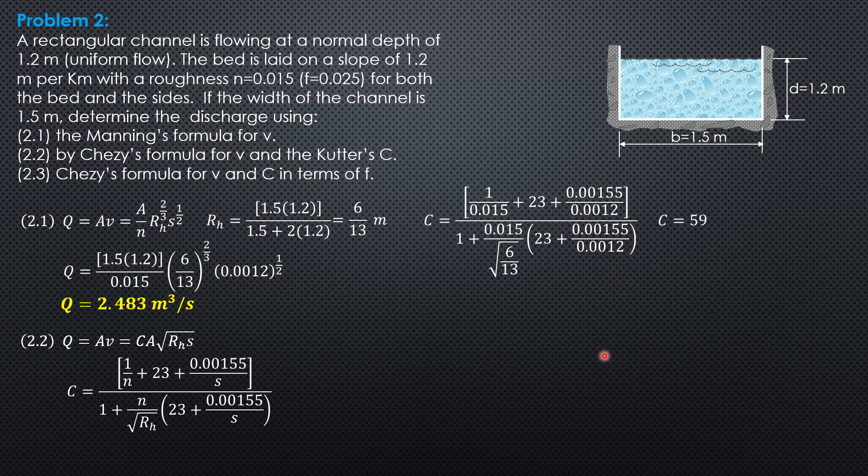So C is 59.204 meter to the 1 half per second, substitute here, Q equals 59.204 area 1.5 times 1.2, then square root of 6 over 13 times 0.0012. So Q is 2.508 cubic meter per second.